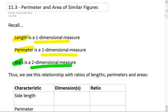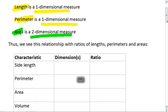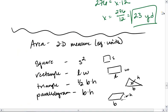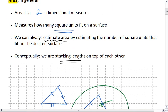Thus, this gives us an interesting relationship with the ratios of lengths, perimeters, and areas. This is what we see, and let's go ahead and go back to a blank grid. Here we go.